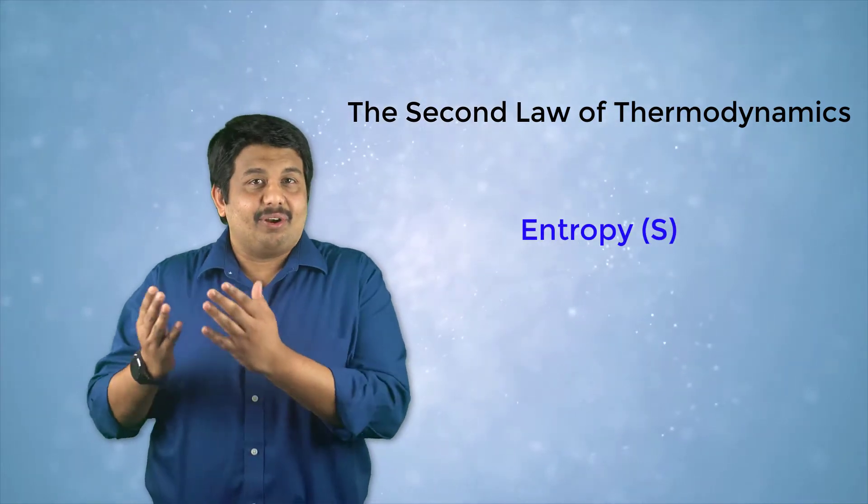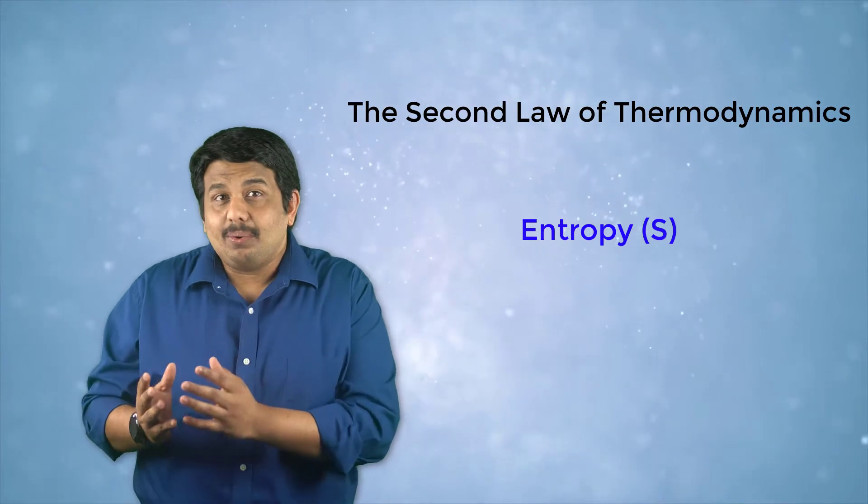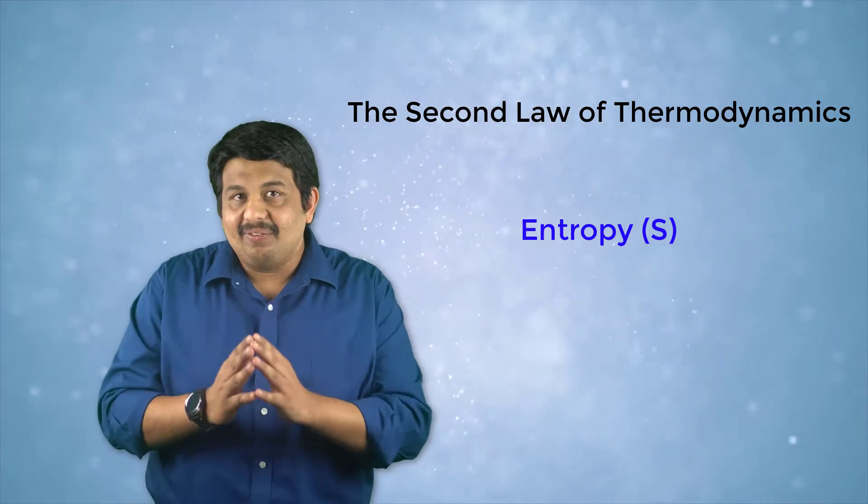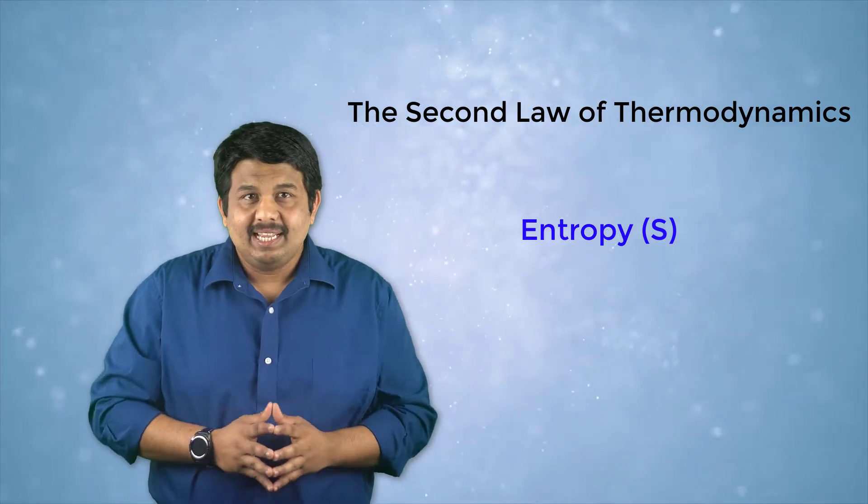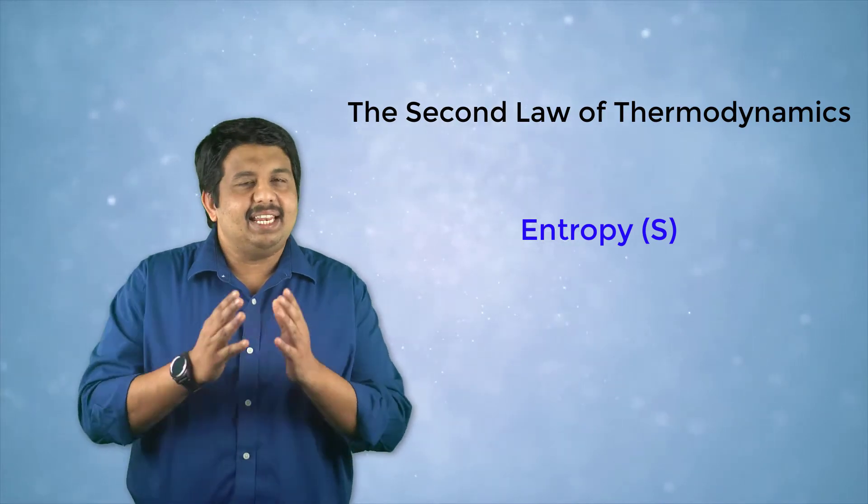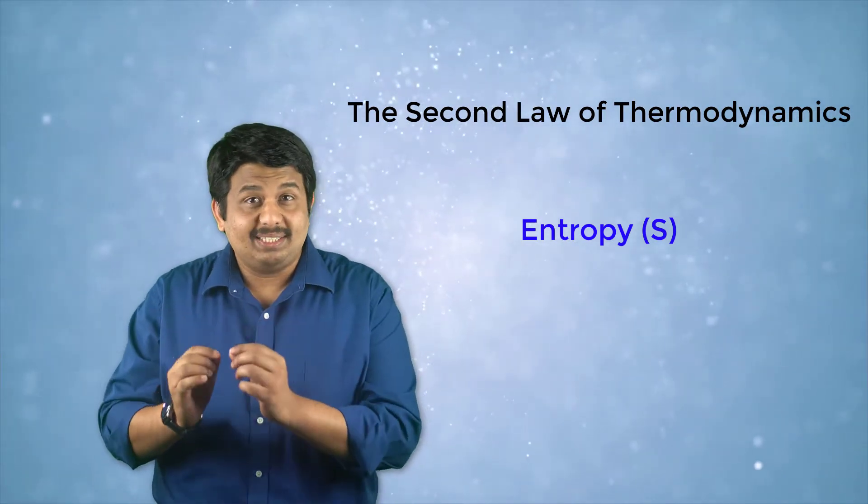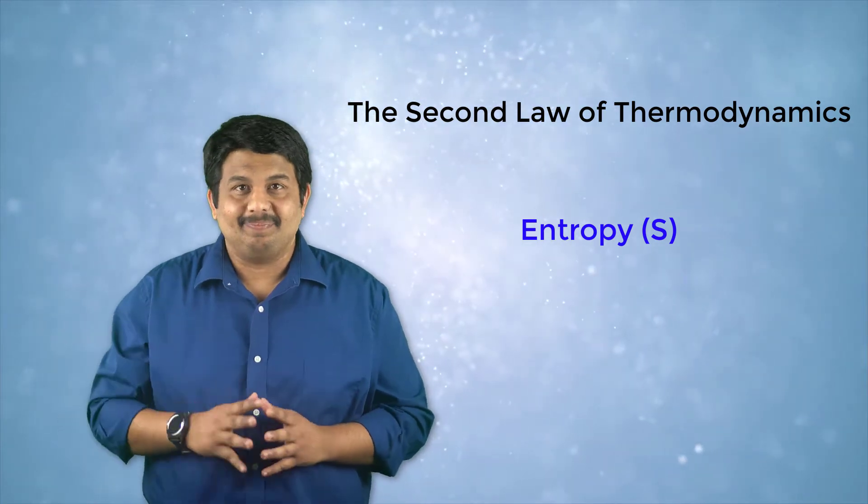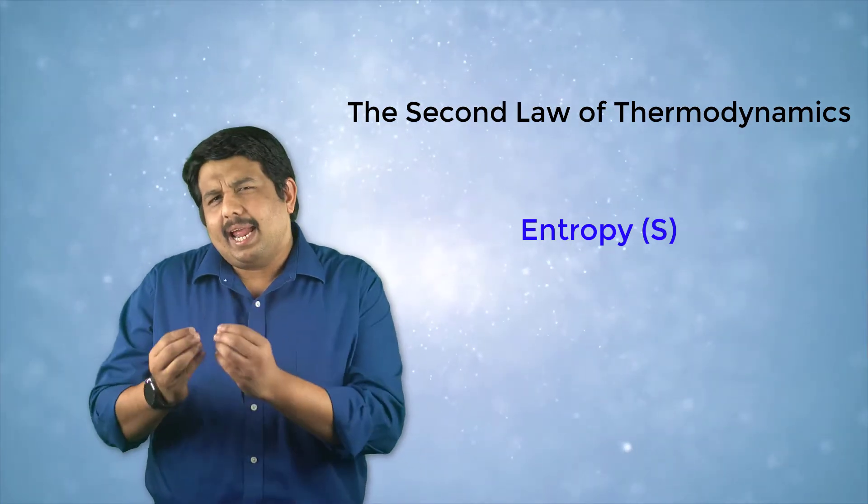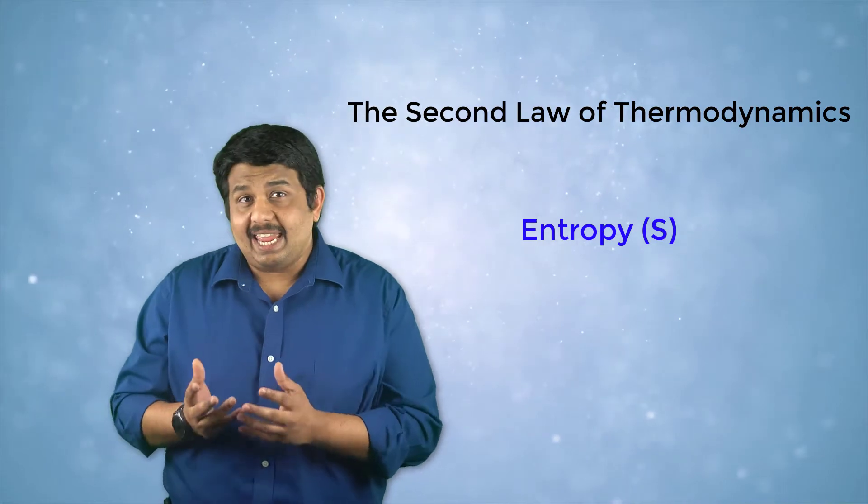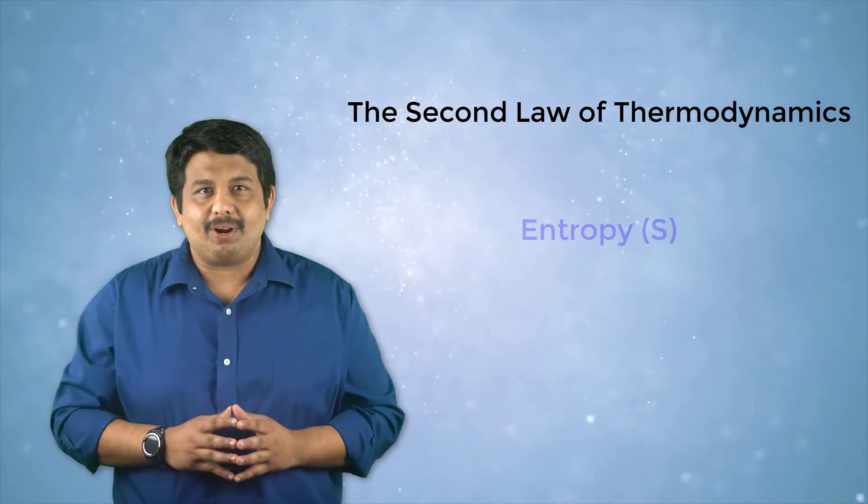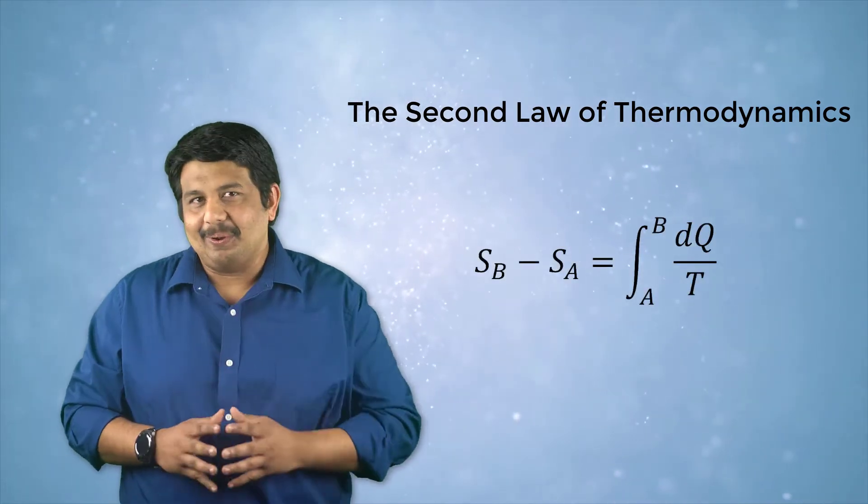It states that for a closed system, without exchanging any heat and work with the surroundings, the entropy increases in any spontaneous process and is maximum once the system reaches equilibrium. The entropy between two states A and B in a reversible process is given by the following equation.